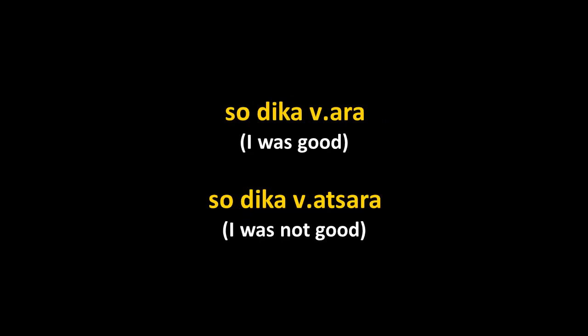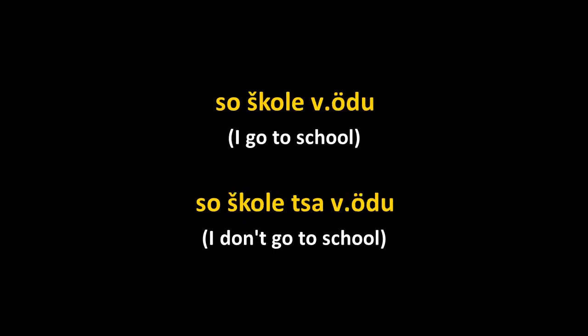In the past: so dikavara ('I was good'), so dikavatsara ('I was not good'). In the past tense, the negative form is -atzara. But for most verbs, negation is very simple — you just add tzá before the verb. 'I go to school' becomes 'I don't go to school' by inserting tzá before the verb.